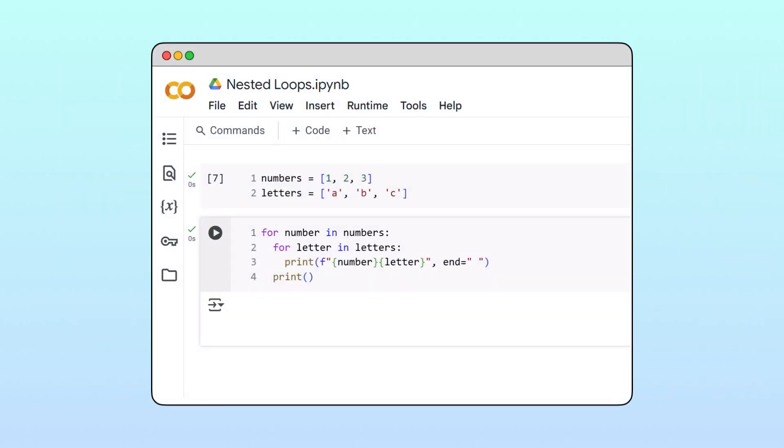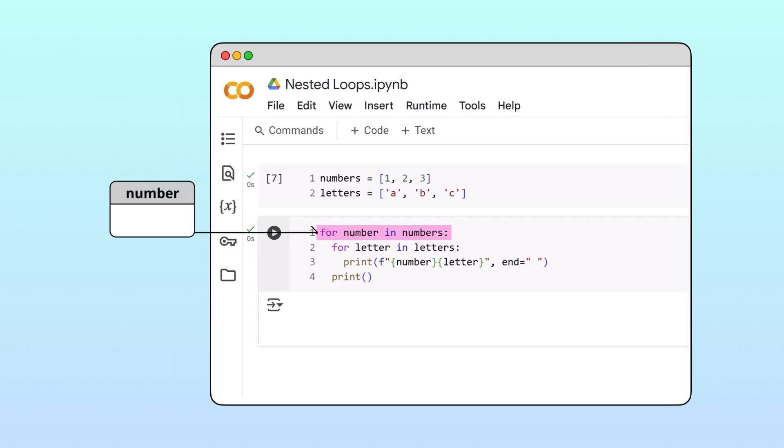When we run this code, Python starts by executing the outer for loop's header and sets the number iteration variable equal to 1, the first item in the numbers list.